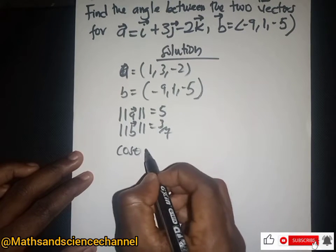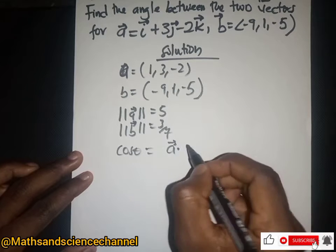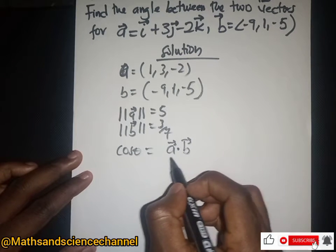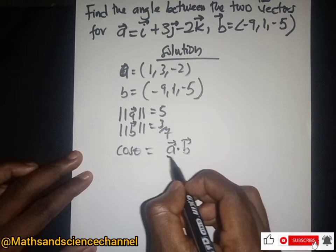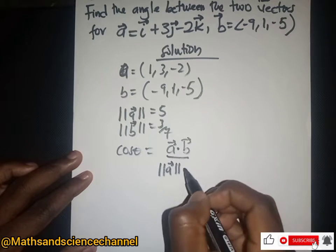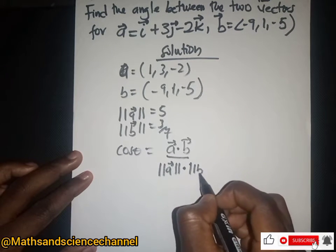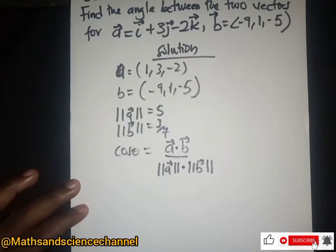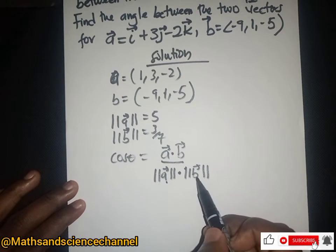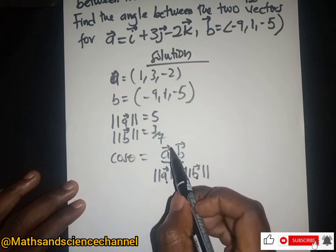We take cos θ equal to the dot product of vector a and vector b, divided by the magnitude of vector a multiplied by the magnitude of vector b. So we need to find the dot product of a and b.